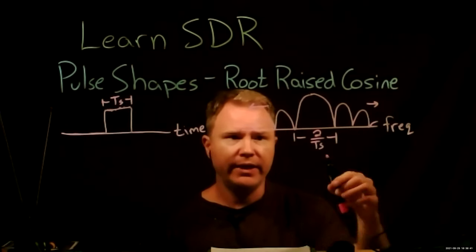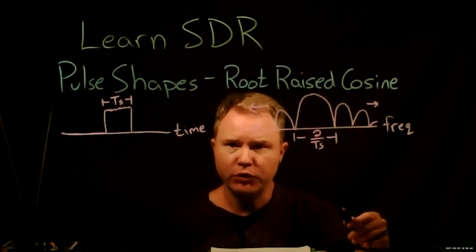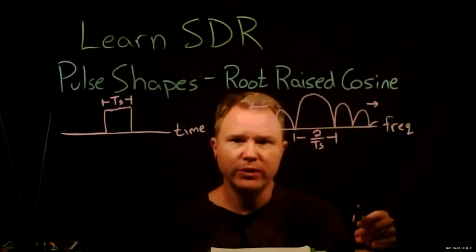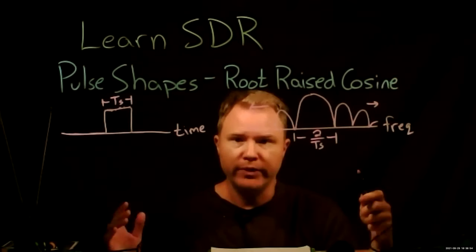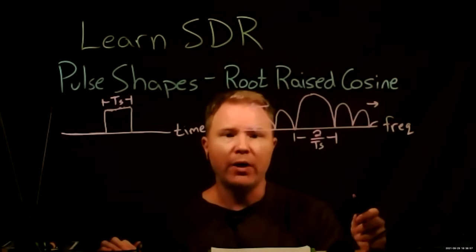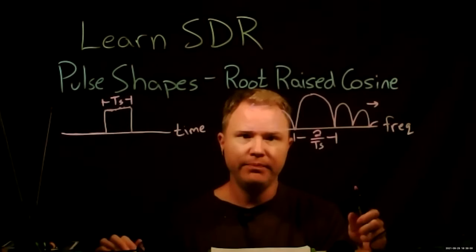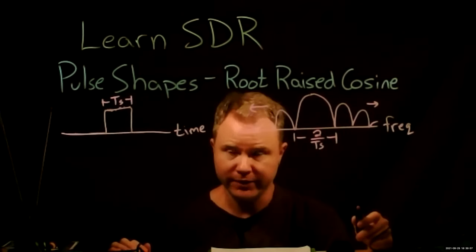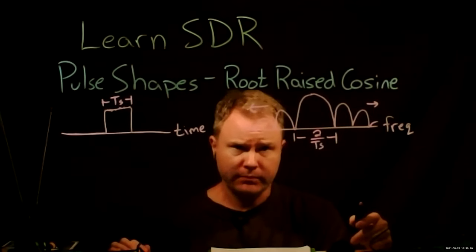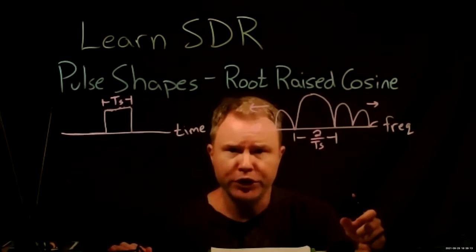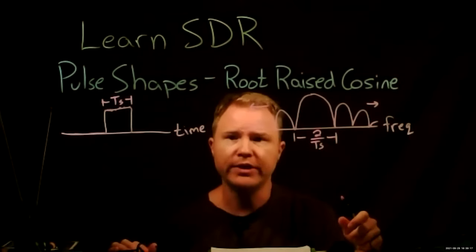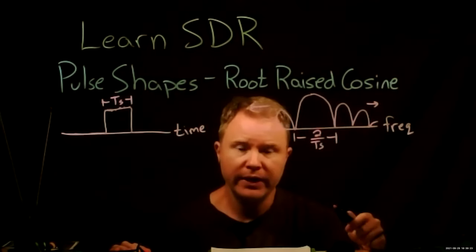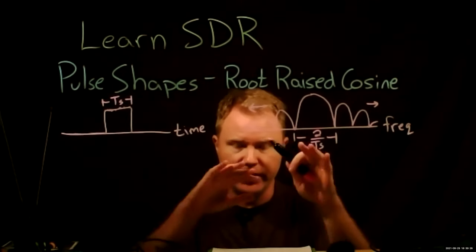What we want are pulses that are much better in terms of their spectral properties, so they don't spew energy out farther than they need to. This is good for two reasons: first, we concentrate all transmitter power in a much narrower region and don't interfere with adjacent channels. Second, when we receive, we can filter the narrowest region possible to reject noise and interference from adjacent channels.